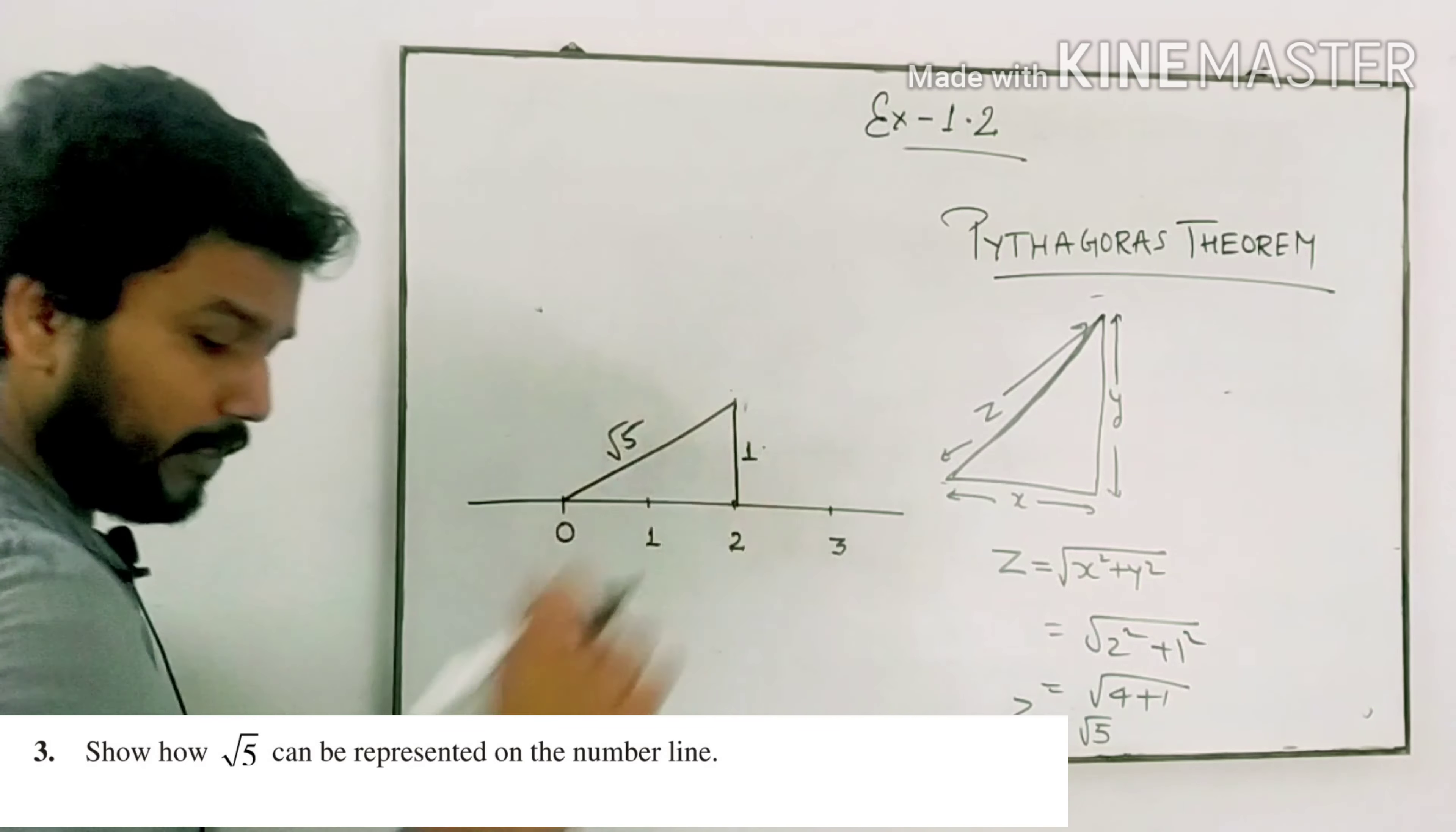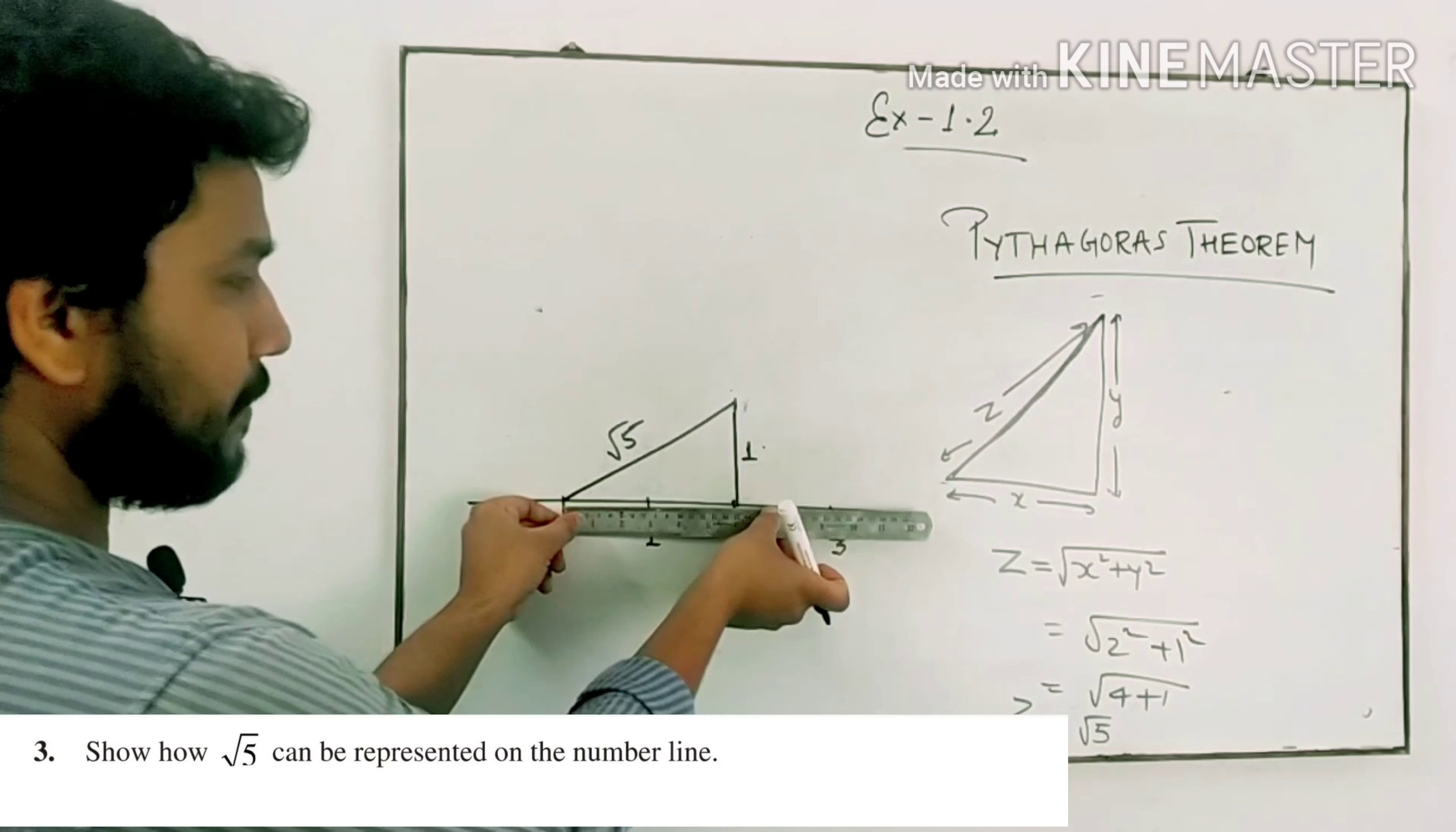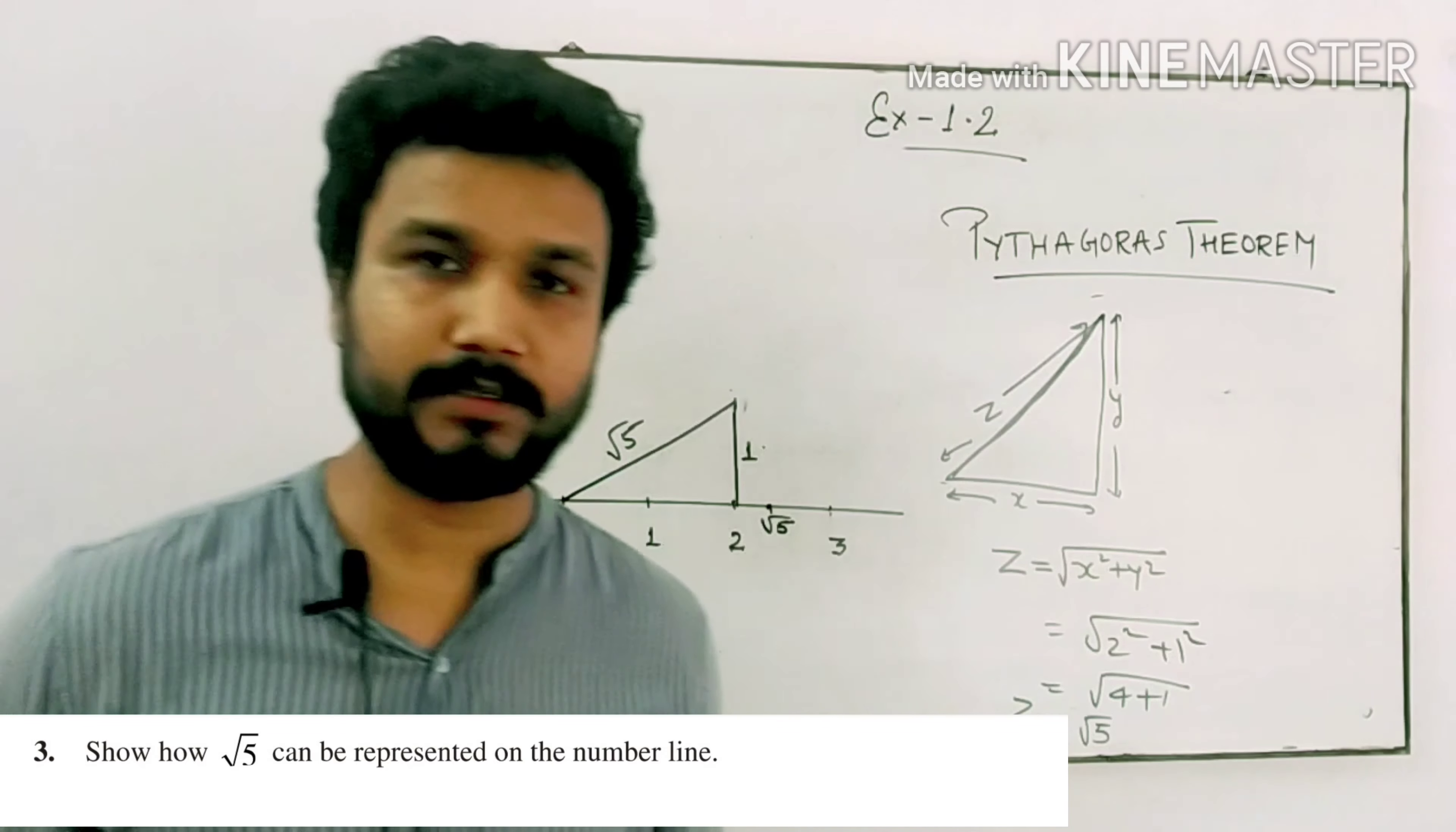Now use a compass to measure the hypotenuse and mark this distance on the number line. This is the point of root 5. In this way, root 5 can be represented on the number line.